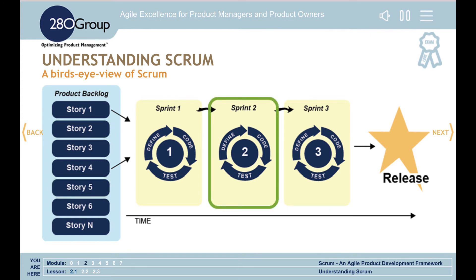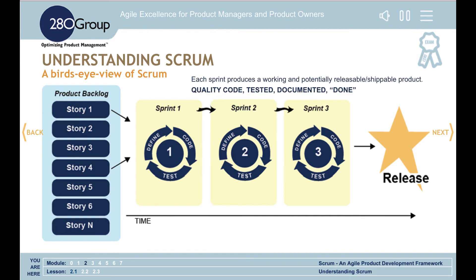At the end of each iteration or sprint, you end up with a working product that is potentially releasable. By potentially releasable, we mean that it's quality code that's been tested and documented. It works and meets the team's definition of done.